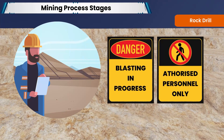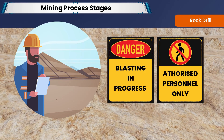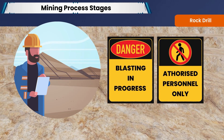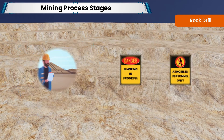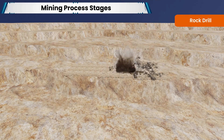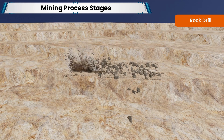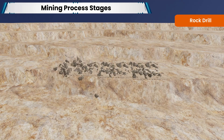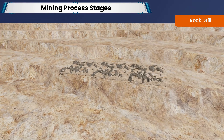This is followed by the blasting process, which is conducted under strict supervision and safety precautions. This is done to break the rock into manageable pieces. The size and frequency of the blasts depend on the quarry's size and the type of rock being extracted.